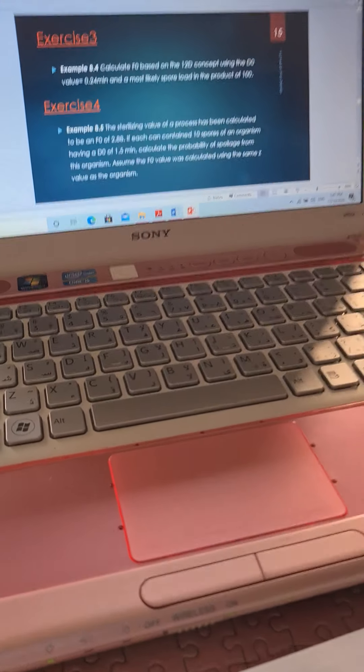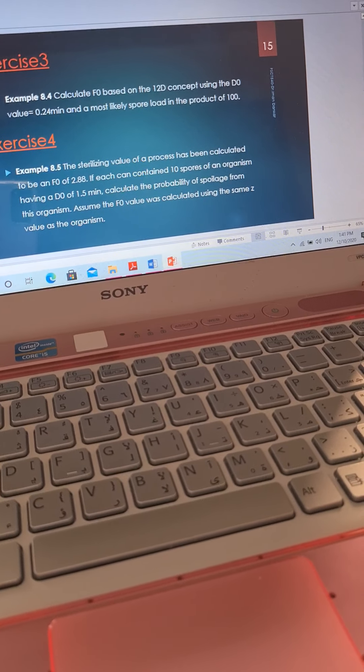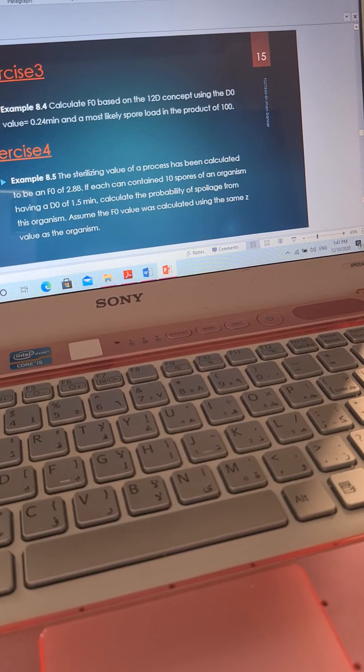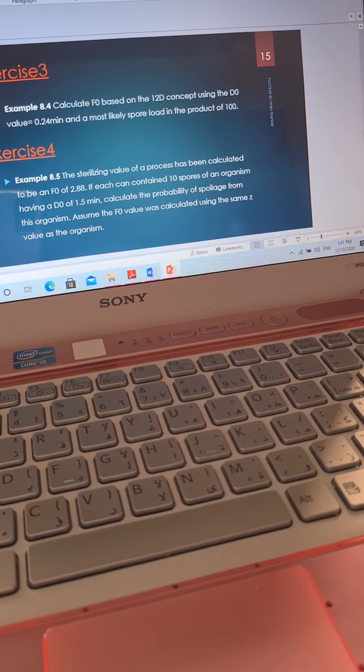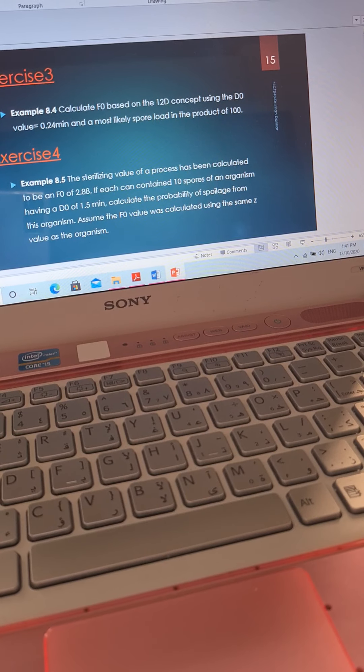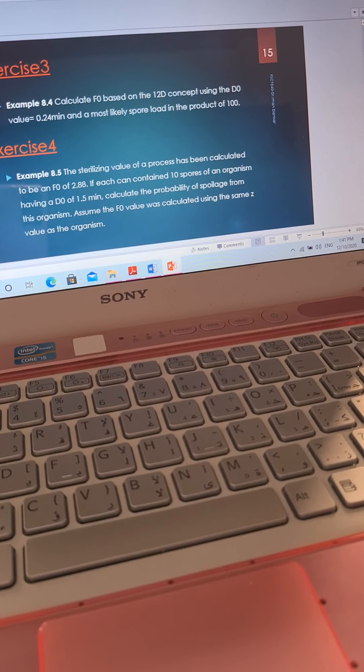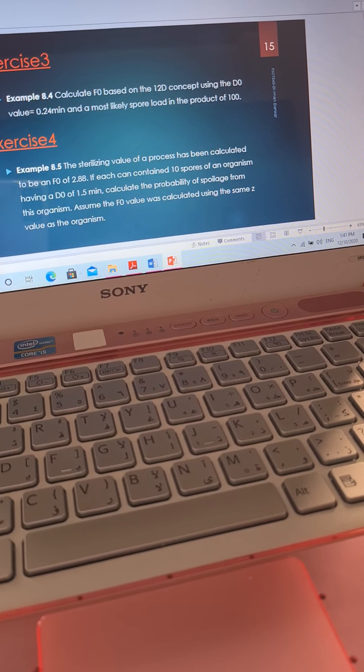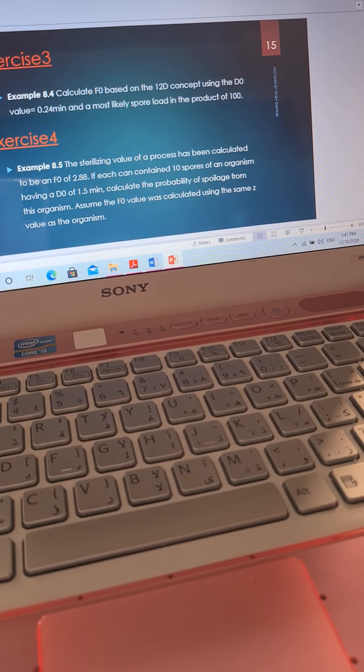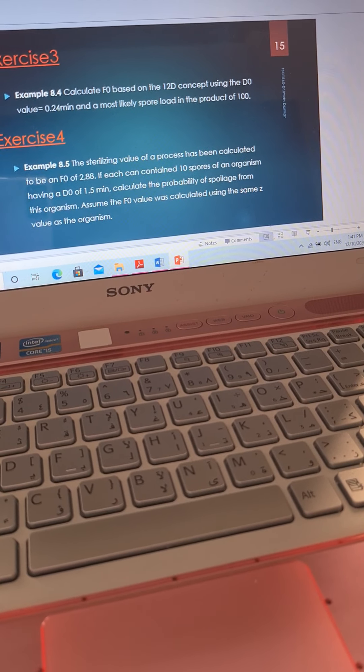Going back to exercise 4, we have to calculate the sterilizing value of a process that has been calculated to be an F0 of 2.88. If each can contained 10 spores of an organism, having a D0 of 1.5 minutes, calculate the probability of spoilage from this organism. Assume the F0 value was calculated using the same Z value as the organism.